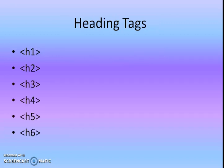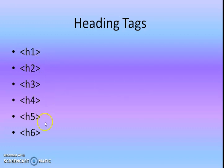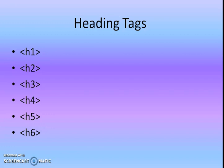Next one is heading tags. We have six types of headings: h1 to h6. H1 is the largest size and h6 is the smallest size. Based on your heading requirement you can choose any one heading from h1, h2, h3, h4, h5, and h6. So: background color, background image, then heading tags.